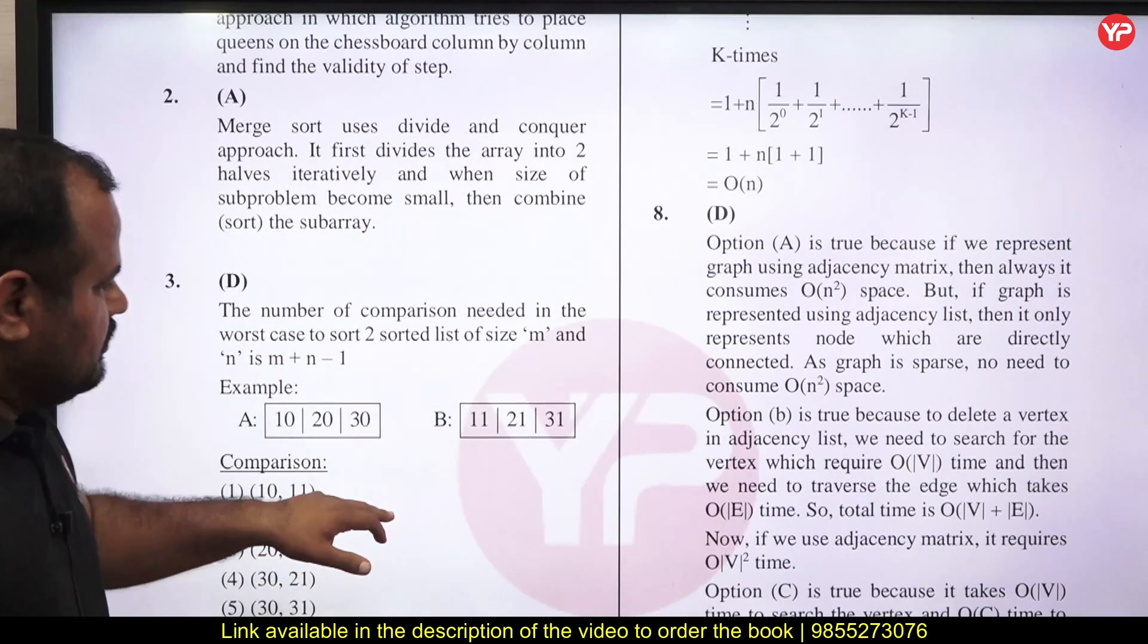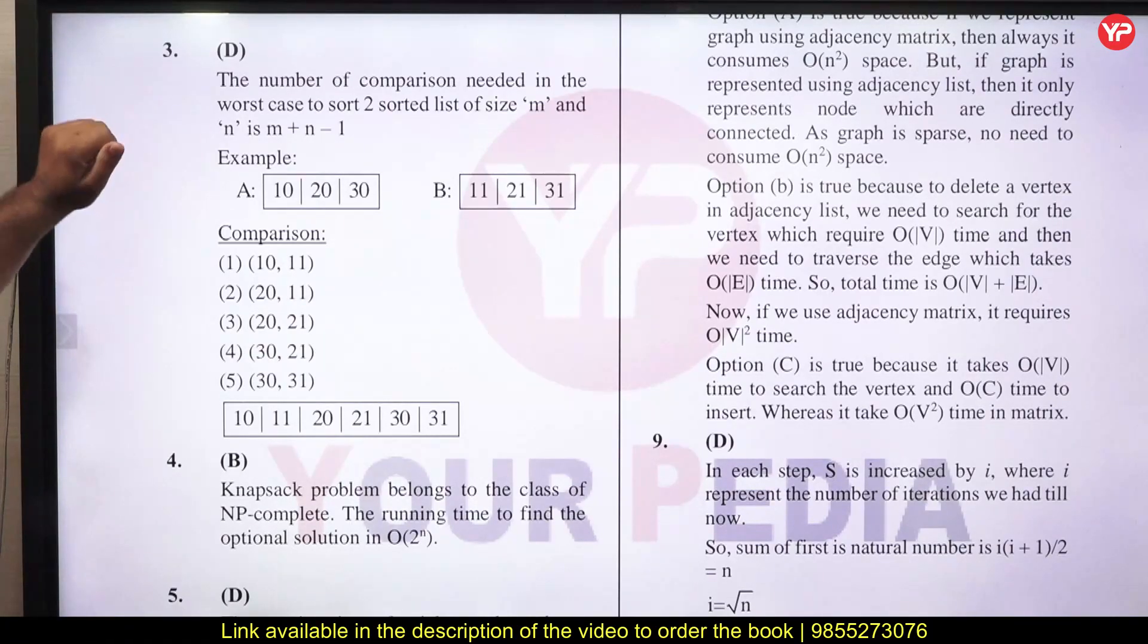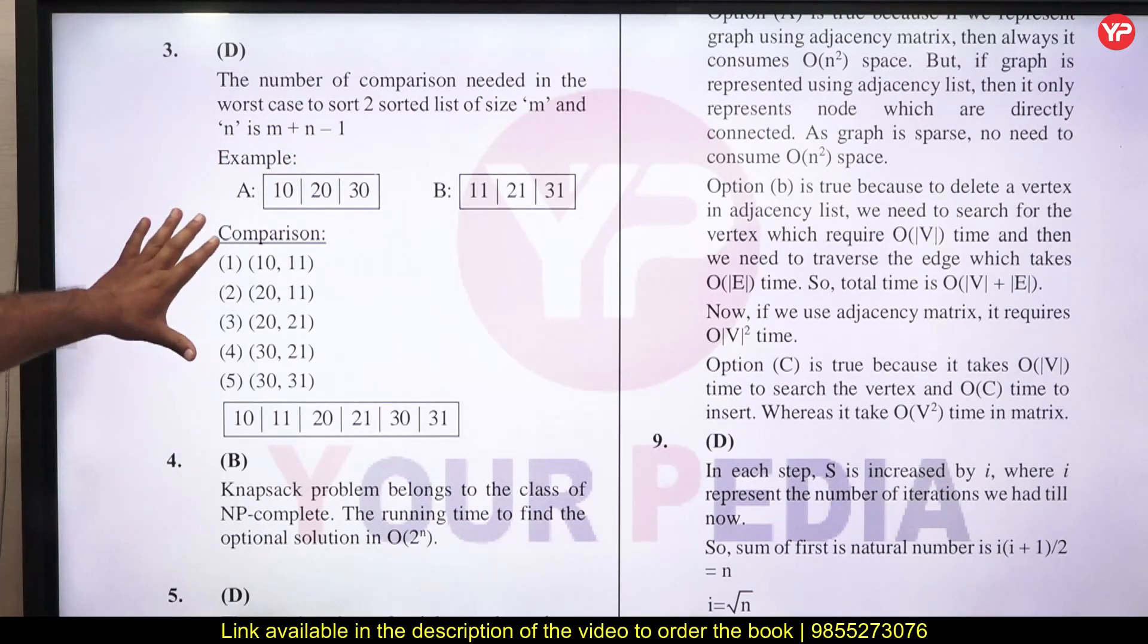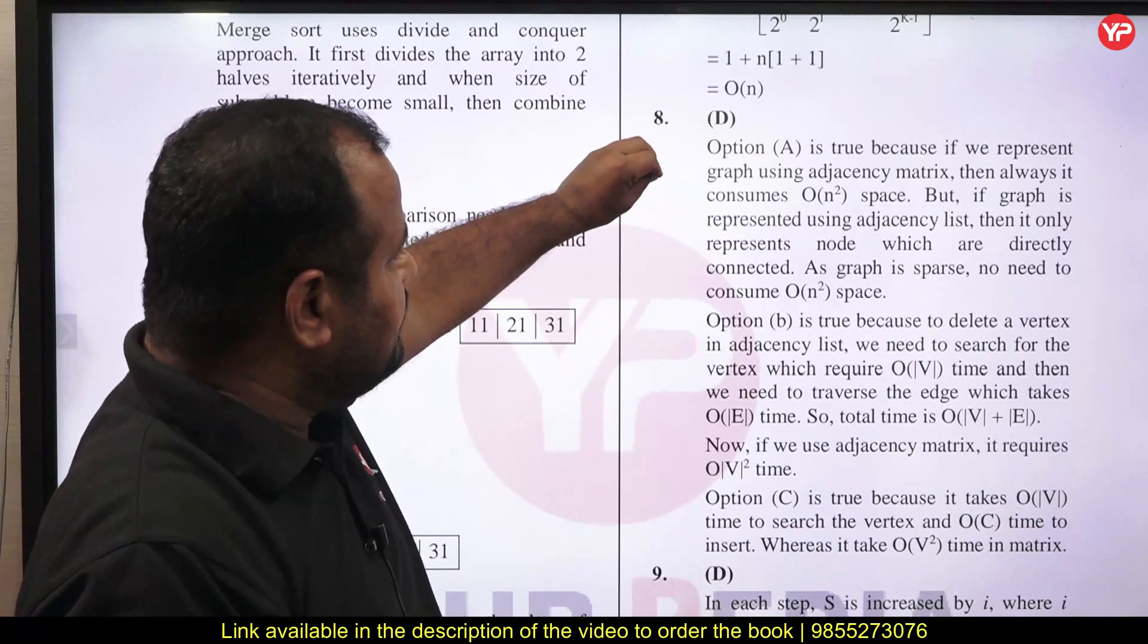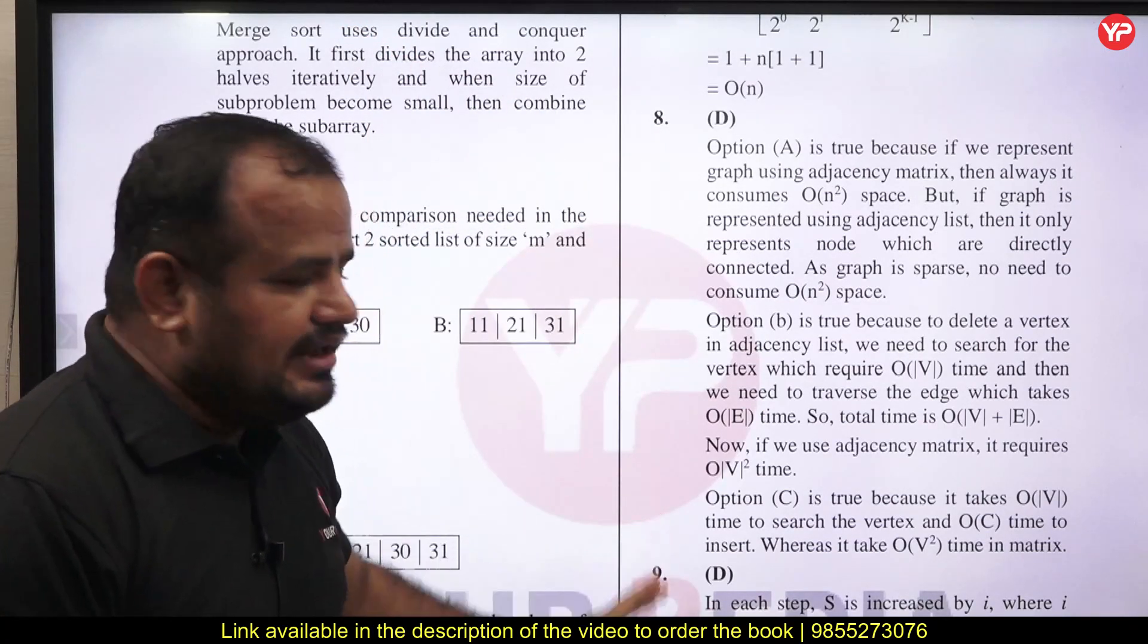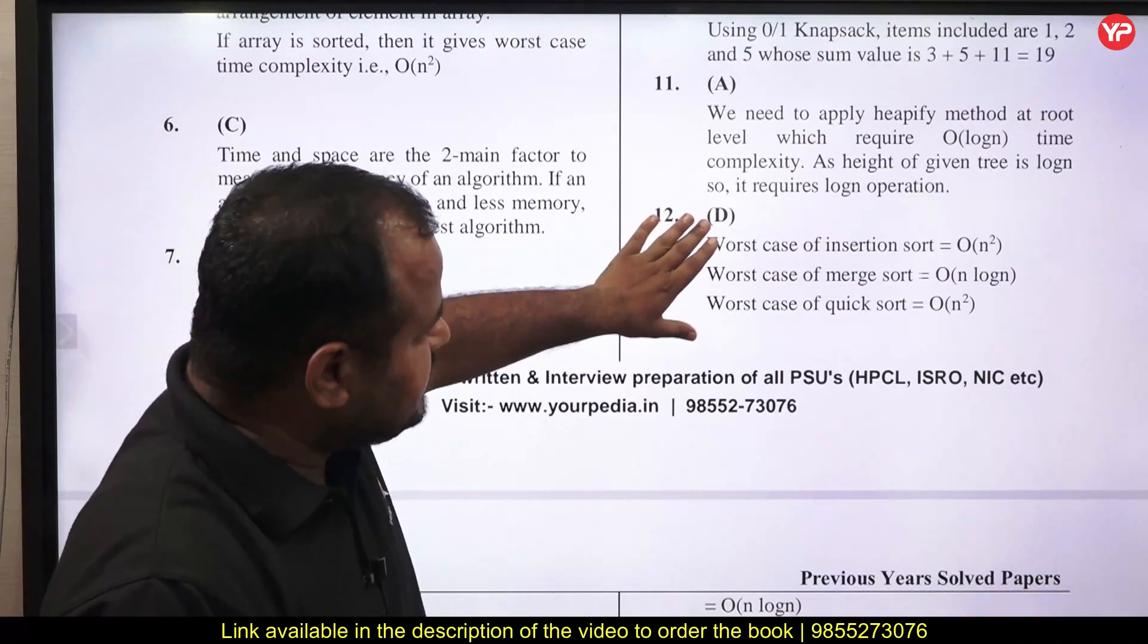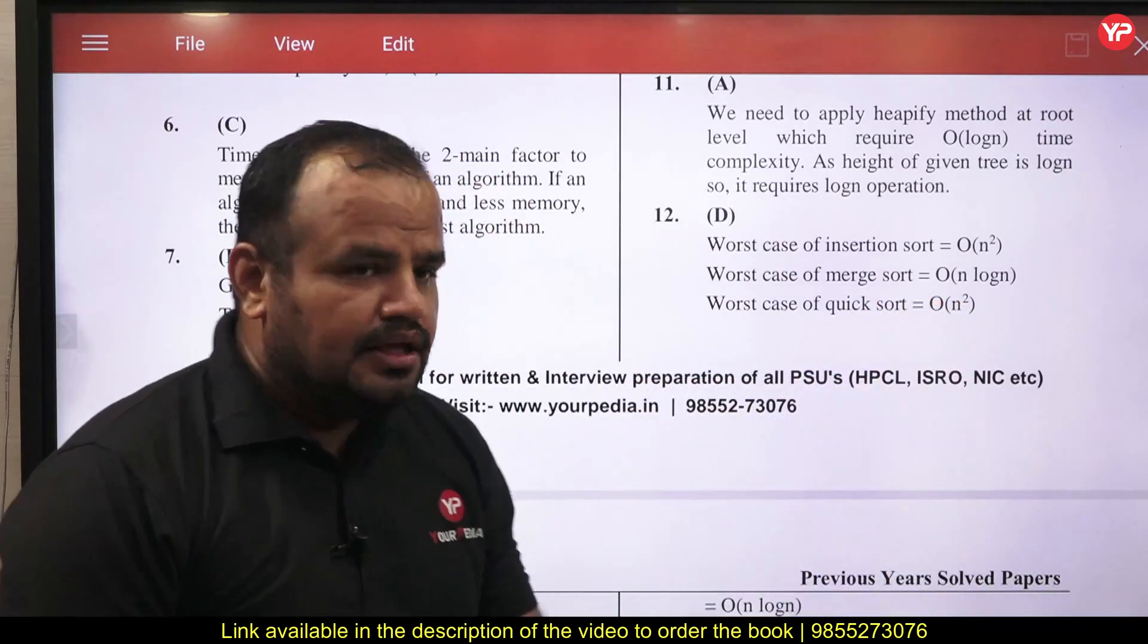Next, the problem is: total number of comparisons required to sort two sorted lists. We know that total number of comparisons is m plus n minus 1, but we give you the detail how it is m plus n minus 1. Here, see one problem: if we use graph representation using adjacency matrix or adjacency list, what is the benefit of all this? It is a very simple problem, but we provide you detailed solutions.